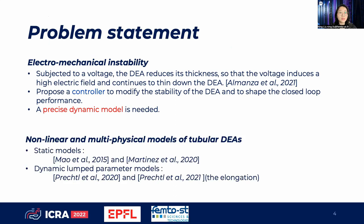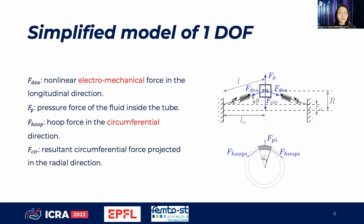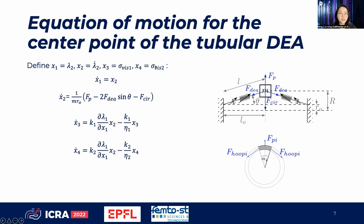Several static models have been proposed in the literature, but a dynamic lambda parameter model has also been established which focuses on the elongation of the Tubular DEA. In our paper, we have firstly proposed a nonlinear multiphysic dynamic model of the Tubular DEA with radial deformation. To simplify it, the Tubular DEA is simplified as illustrated in the red figure, focusing only on the deformation of the middle point of the tube. The DEA is activated by these forces, and by choosing these state variables, the dynamic model is presented by the following equations.